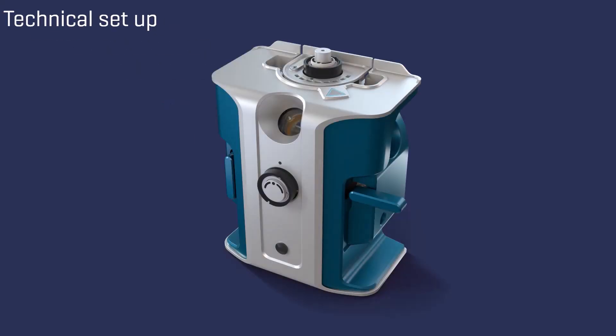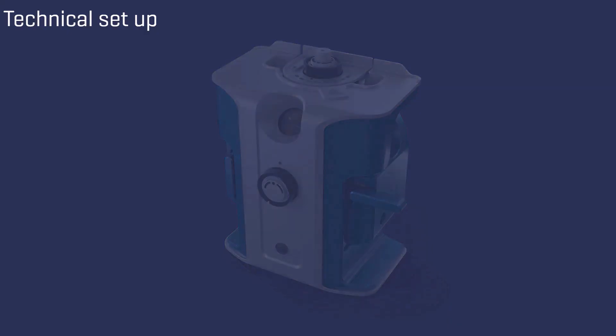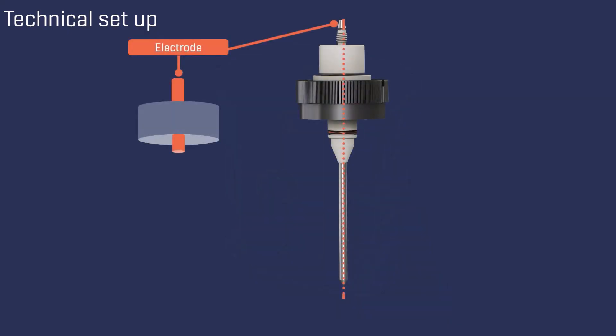Let's first examine the technical setup of SCIEX electrospray ion sources that enables the electrospray process. The LC liquid enters through the electrode, which is embedded into the probe. When the electrospray voltage is applied, the spray of bigger droplets is visible at the end of the electrode.